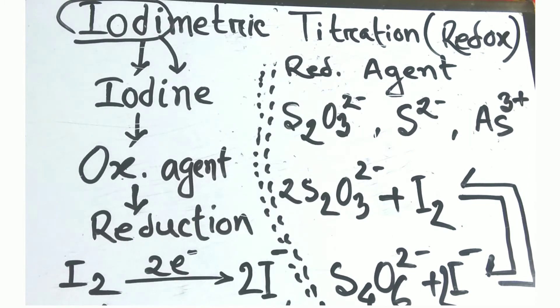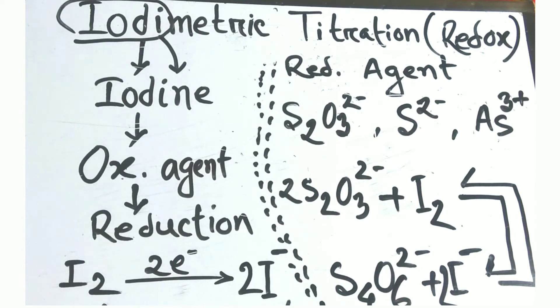Here, iodine is an oxidizing agent. It will undergo reduction and iodine will be converted into iodide in solution. Because it is a redox titration, you will need another reducing agent. We will need sodium thiosulfate, and we will especially discuss sodium thiosulfate here. When we see the reaction of sodium thiosulfate and iodine, you may see the reaction here.